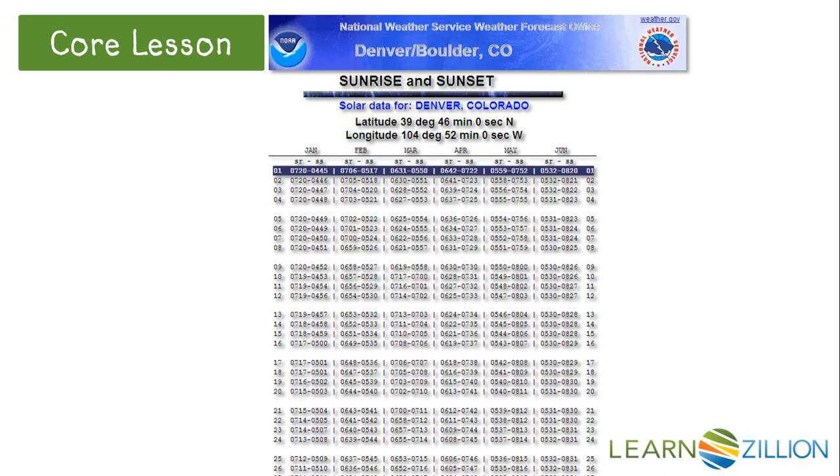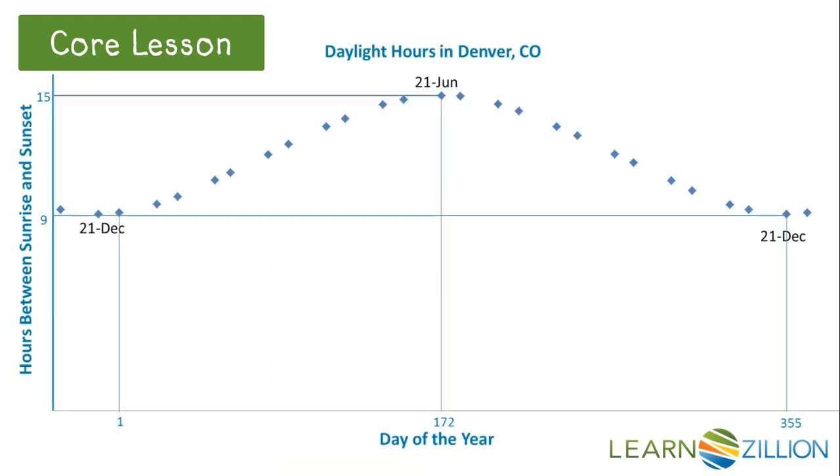The National Weather Service publishes data regarding the sunset and sunrise for locations in the United States. Here is the data for Denver, Colorado. The data on the 1st and the 21st of each month is plotted on this graph. Notice the shape of the graph? We can model this data as a sinusoidal function.